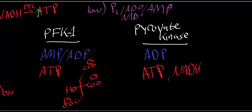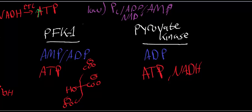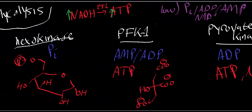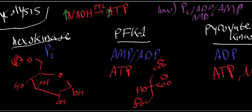In general, these are the main allosteric effectors of glycolysis. When these enzymes are shut off, it tends to promote gluconeogenesis — the process of taking pyruvate and forming glucose-6-phosphate or glucose. I hope this video helped you understand energy charge and allosteric regulation of glycolysis. When we do the TCA cycle, we'll look at the allosteric regulation of those enzymes as well. See you soon.